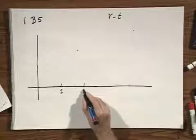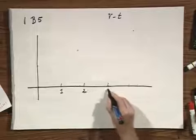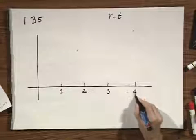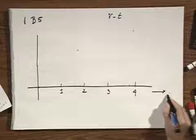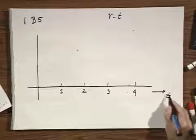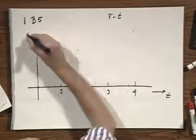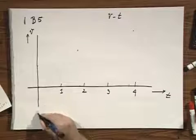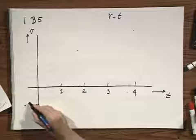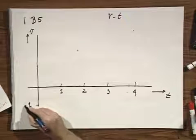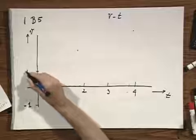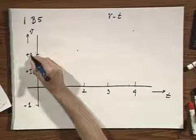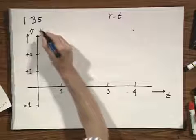The time axis goes 1, 2, 3, 4 seconds. The velocity axis shows minus 1 meters per second, plus 1, plus 2, and plus 3.